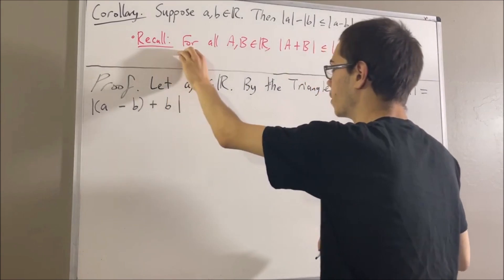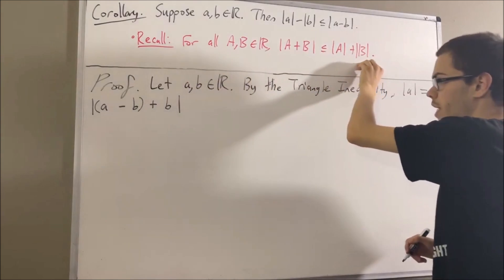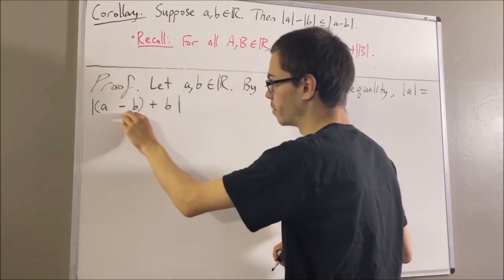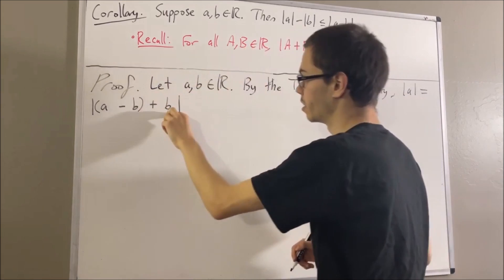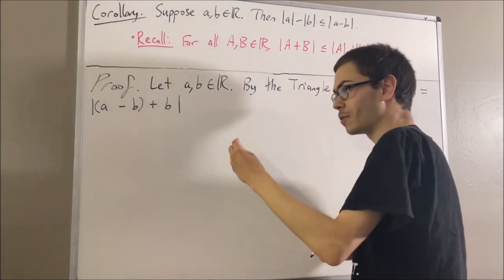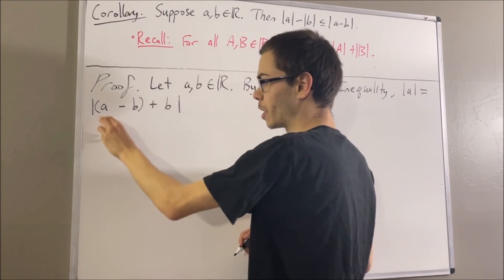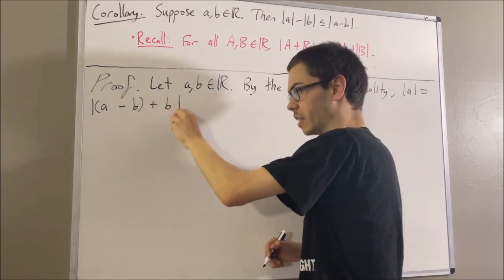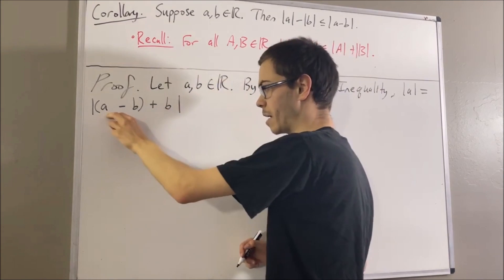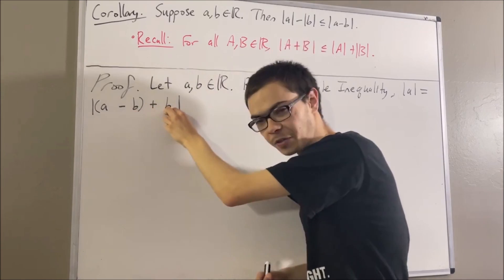In applying this fact, we're going to take capital A to be A minus B and capital B to be B. If we do that, it follows that the absolute value of A minus B plus B is less than or equal to the absolute value of A minus B plus the absolute value of B.